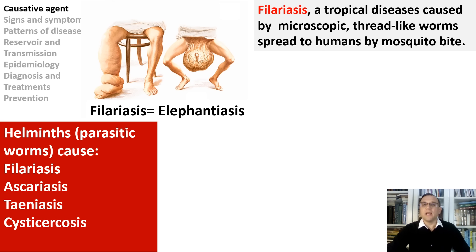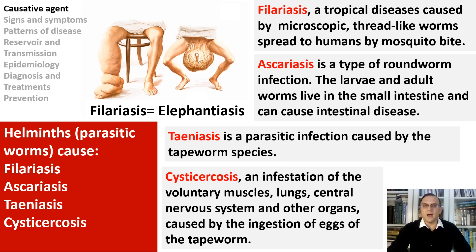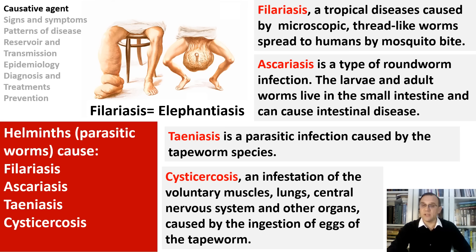Other types of parasitic worms cause ascariasis, taeniasis, and cysticercosis. These parasitic infections can cause diarrhea and fever. Types of roundworms in humans include pinworms and ascaris. Often roundworm infections come from traveling to countries with poor sanitation and hygiene. Worms are mainly spread through small pieces of feces from people with a worm infection — but filarial worms that cause filariasis spread to humans by mosquitoes.